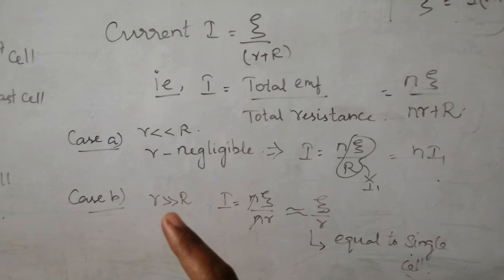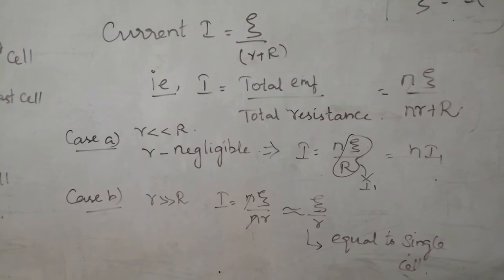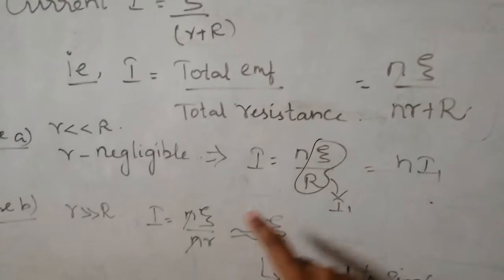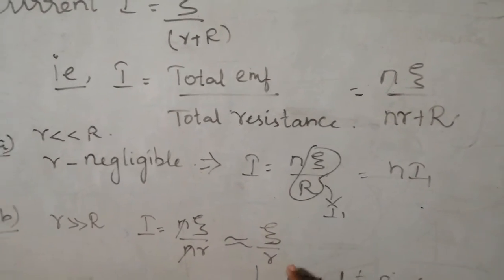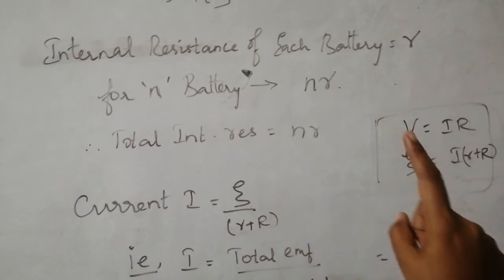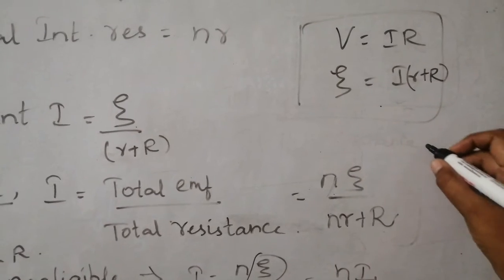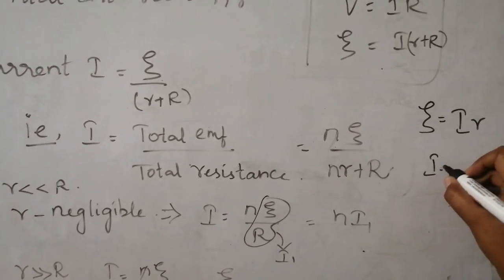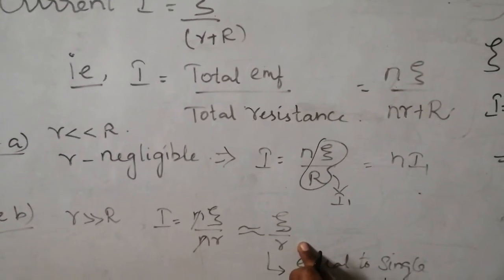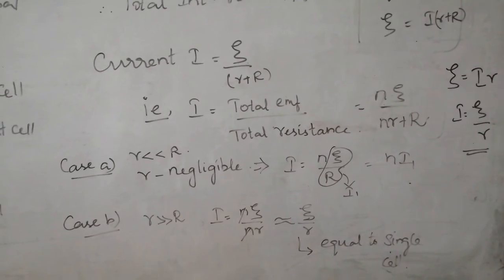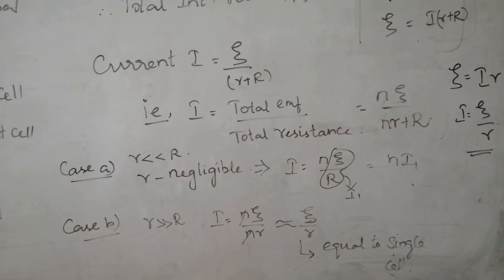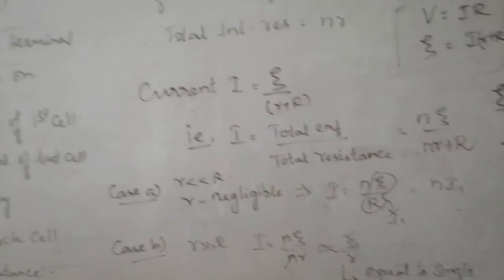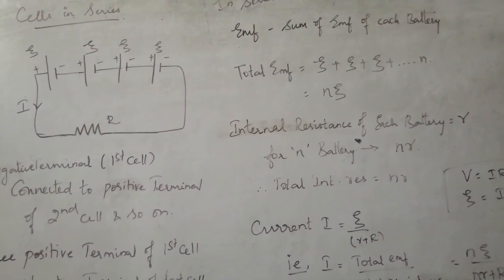Case B: when the internal resistance is much greater than the external resistance, R is negligible. The equation becomes I = N·ψ / (N·r), and the N cancels to give I = ψ / r — the same as for a single cell. So no matter how many batteries you connect in series, if each has high internal resistance, the current equals that of a single cell and there is no benefit. We will cover cells in parallel in the next video.